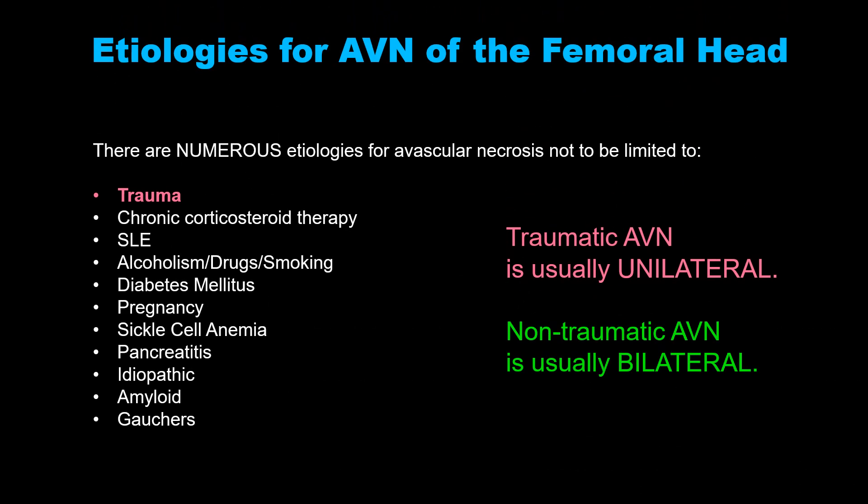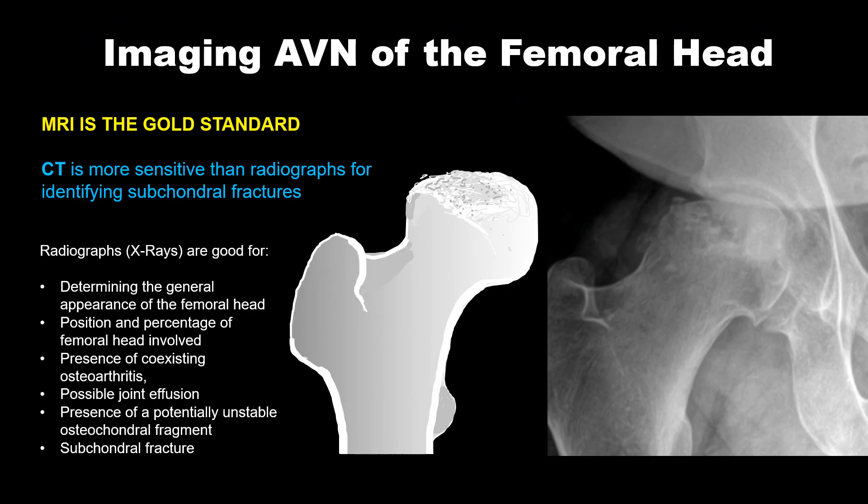There are numerous etiologies for AVN of the femoral head, including trauma, chronic corticosteroid therapy, systemic lupus erythematosus, alcoholism, drug use, smoking, diabetes, pregnancy, sickle cell anemia, pancreatitis, idiopathic causes, amyloid, and Gaucher's disease. When traumatic, it is usually unilateral, whereas many non-traumatic causes typically present bilaterally. MRI is the gold standard for diagnosis and staging, while CT is much more sensitive than x-ray.